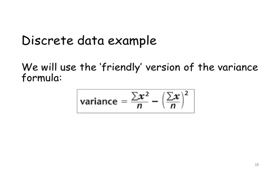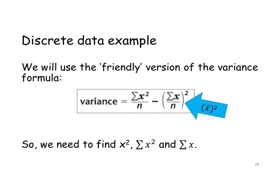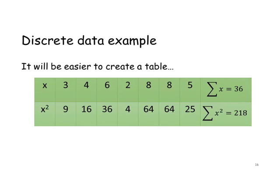We'll use the friendly version of the variance formula. You may notice that the second term, the sum of x divided by n all squared, is actually x-bar squared — it's the mean of the data squared. So we need to find x-squared, the sum of x-squared, and the sum of x to use this formula, and it's easiest to do this in a table. Our data values x are: 3, 4, 6, 2, 8, 8, 5. In the second row we have x-squared, having simply squared all the values of x. The sum of x equals 36 and the sum of x-squared equals 218.